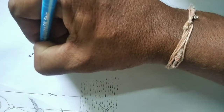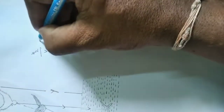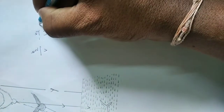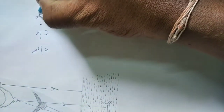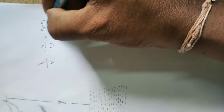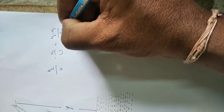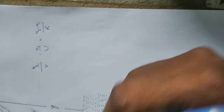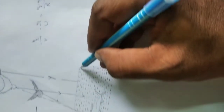The formula used in the problem solution is: N2 by V minus N1 by U is equal to N2 minus N1 by R.